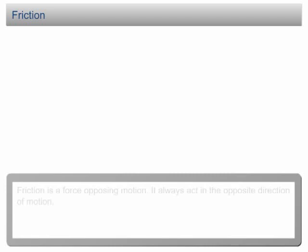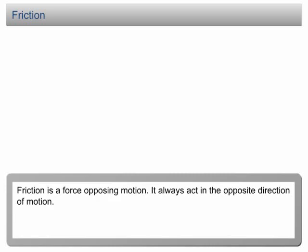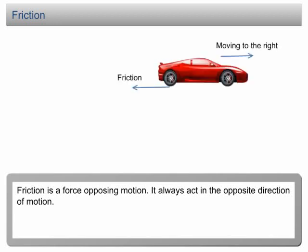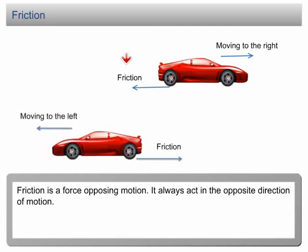Friction is a force opposing motion. It always acts in the opposite direction of motion. For example, if a car moves to the right, the friction will act to the left. When the car moves to the left, the friction acts to the right.